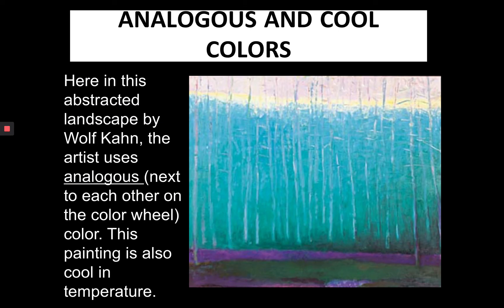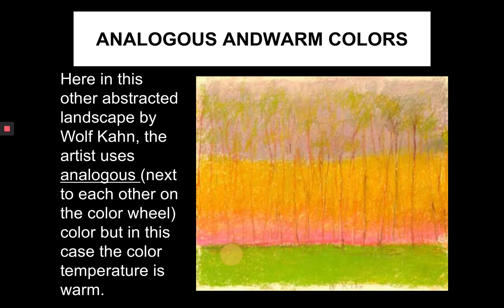Analogous and cool colors. This is an analogous palette: blue, blue-green, and green. The colors are next to each other on the color wheel, and all of the colors are cool — think water. By the same artist, Wolf Kahn, we look at essentially the same painting done with a different color palette, which is a warm palette.